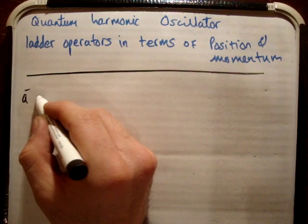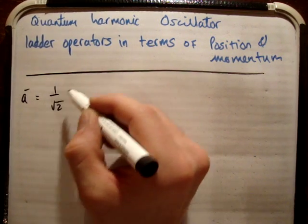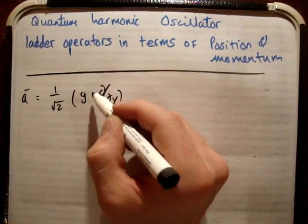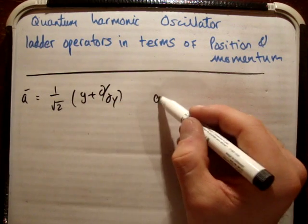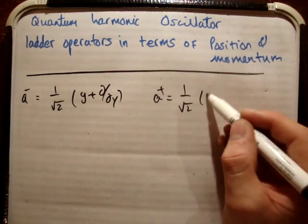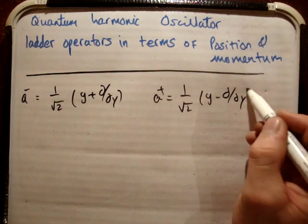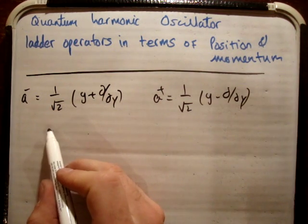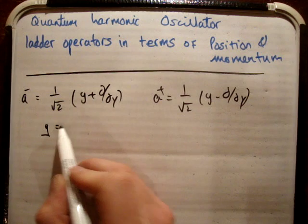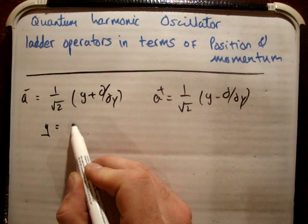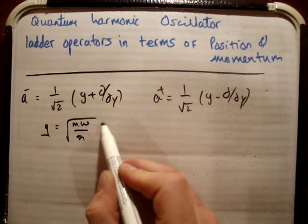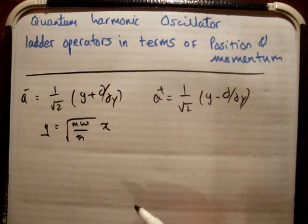I've previously shown that a⁻ is equal to 1 over root 2 times (y + d/dy), and a⁺ is equal to 1 over root 2 times (y − d/dy). We also made the substitution that y is equal to √(mω/ℏ) times x, and that's our scaling factor.